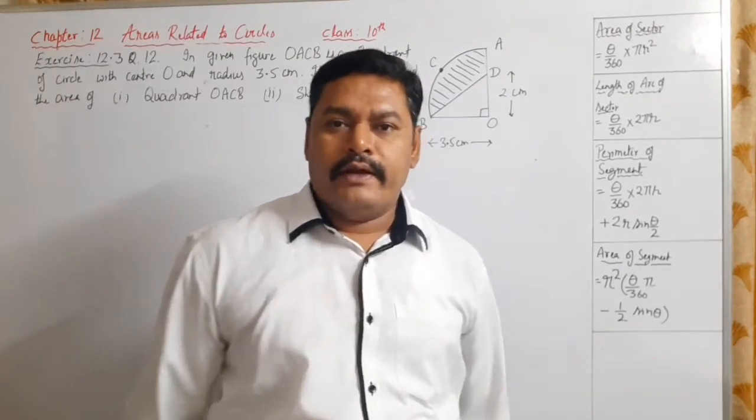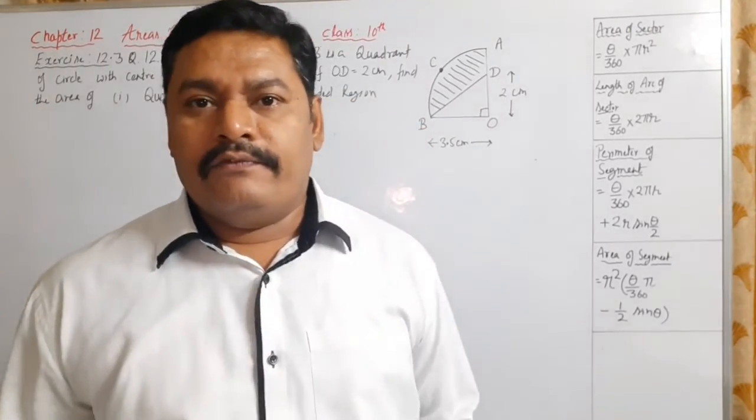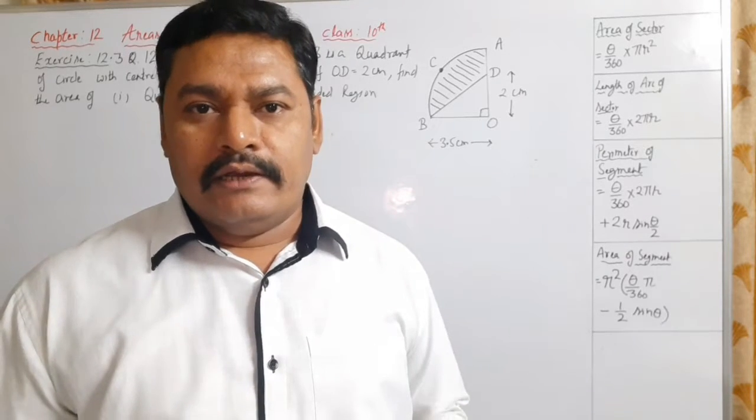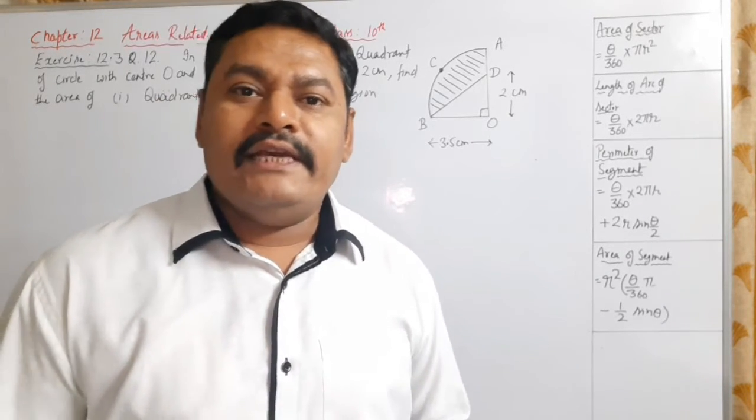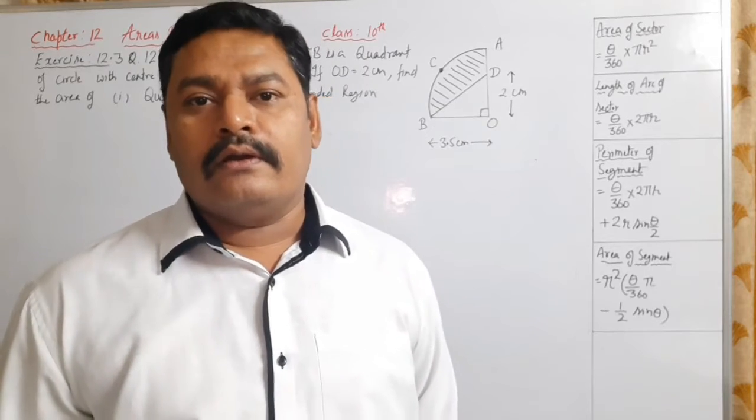As all of you know, what is a quadrant? If a circle has been divided into four equal parts, then each part is called quadrant.